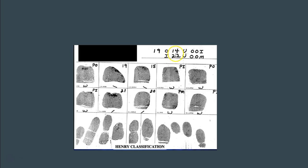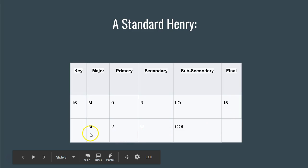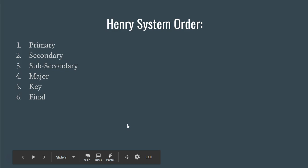The primary consists of two numbers — one in the numerator and one in the denominator. If we were to create a table with boxes, we'd have 12 boxes: six up top for the numerator and six down below for the denominator. When we do a Henry system, there is a specific order we do them in, and the primary is the one we start with first.